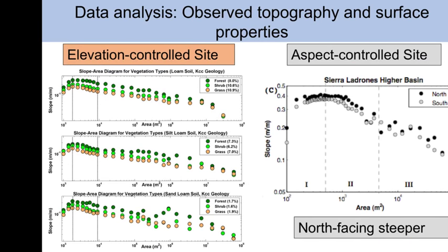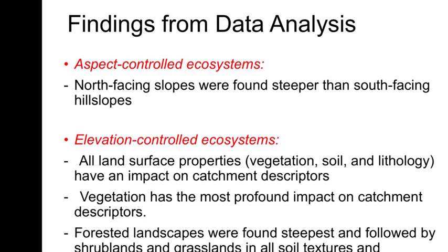If lithology is the same or soil type is the same across sites and we select pixels where the only variable changing is vegetation, the comparison shows: with the same soil type — loam — and same geology, forest is steeper than shrub and grass. Our findings: in aspect-controlled ecosystems, north-facing slopes are always steeper than south-facing slopes. In elevation-controlled systems, all land surface properties — vegetation, soil, and lithology — have an impact, but especially vegetation: forested areas are the steepest, followed by shrub and grassland.